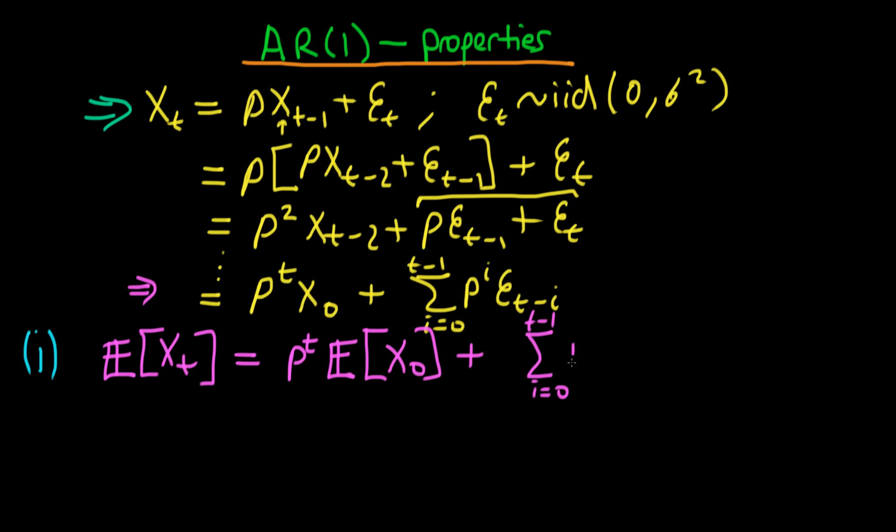Plus now we've got the sum from i equals 0 to t-1 times ρ^i times the expectation of Et-i, because again the expectations operator being a linear operator just passes straight through this ρ^i and there aren't any cross terms that we have to worry about.